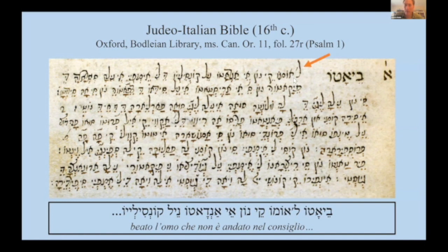You can see here the second word — if you read Hebrew — is l'omo. They even used an apostrophe, l'apostrophe, in imitation of Italian orthography. There are a bunch of texts like this, including other translations from Hebrew, letters, sermons, various kinds of glossaries and dictionaries, and some original texts written in this kind of Judeo-Italian.